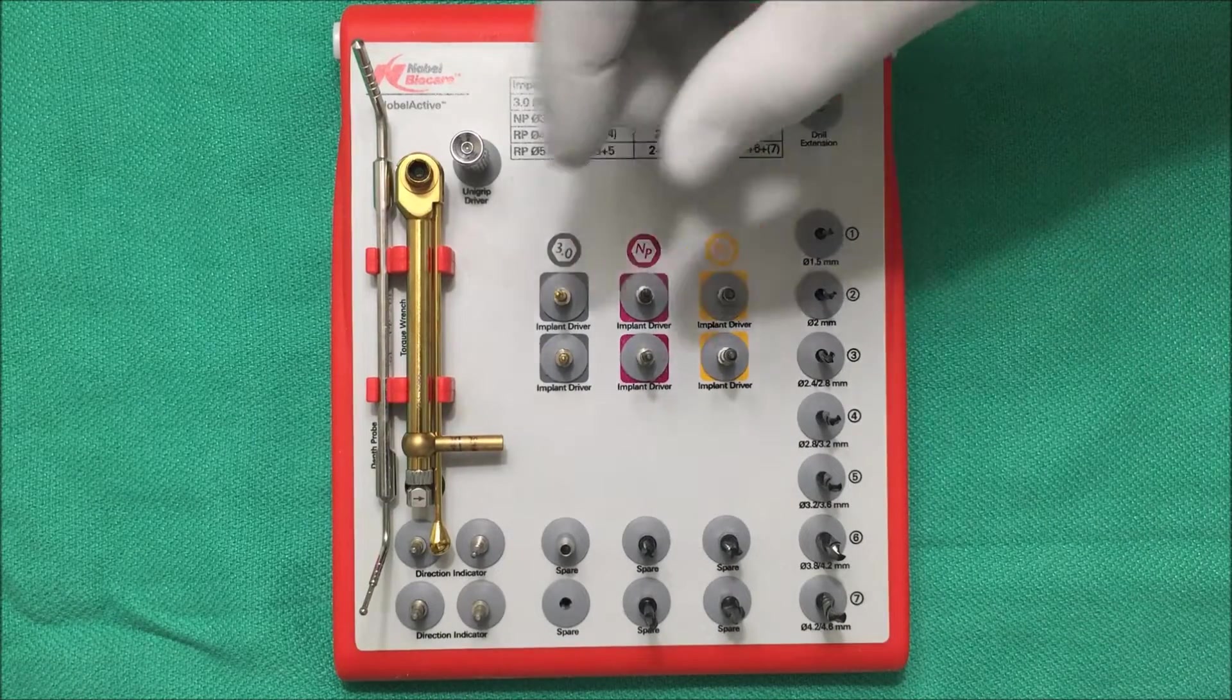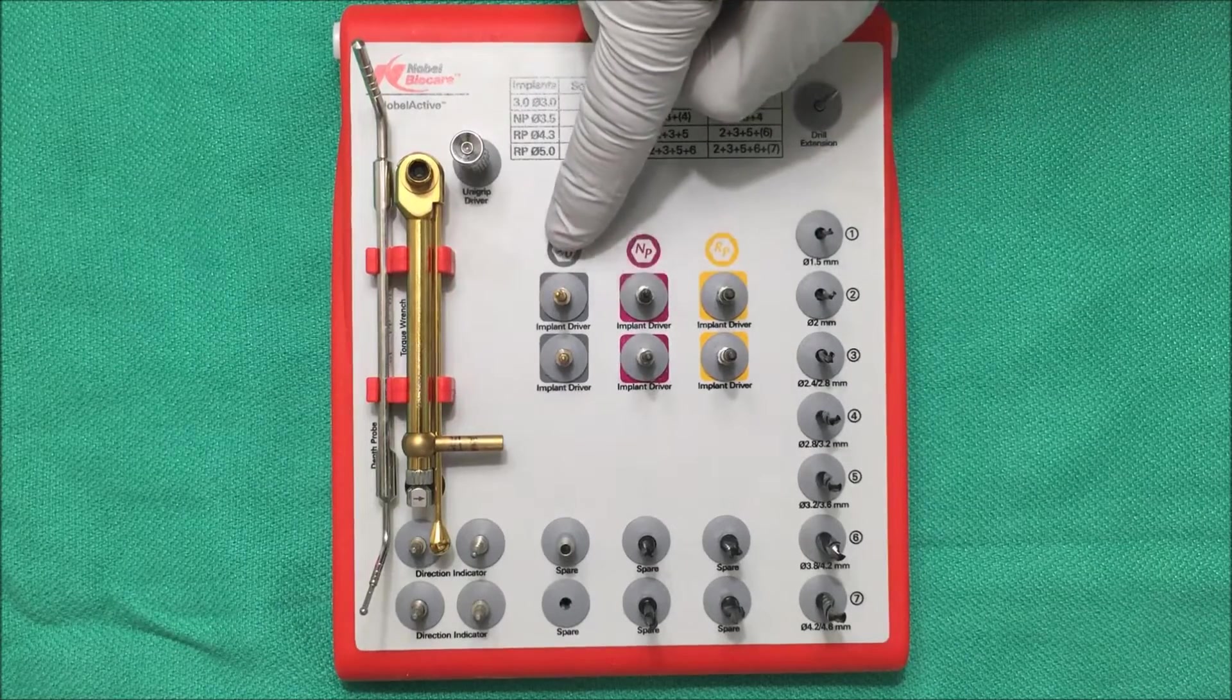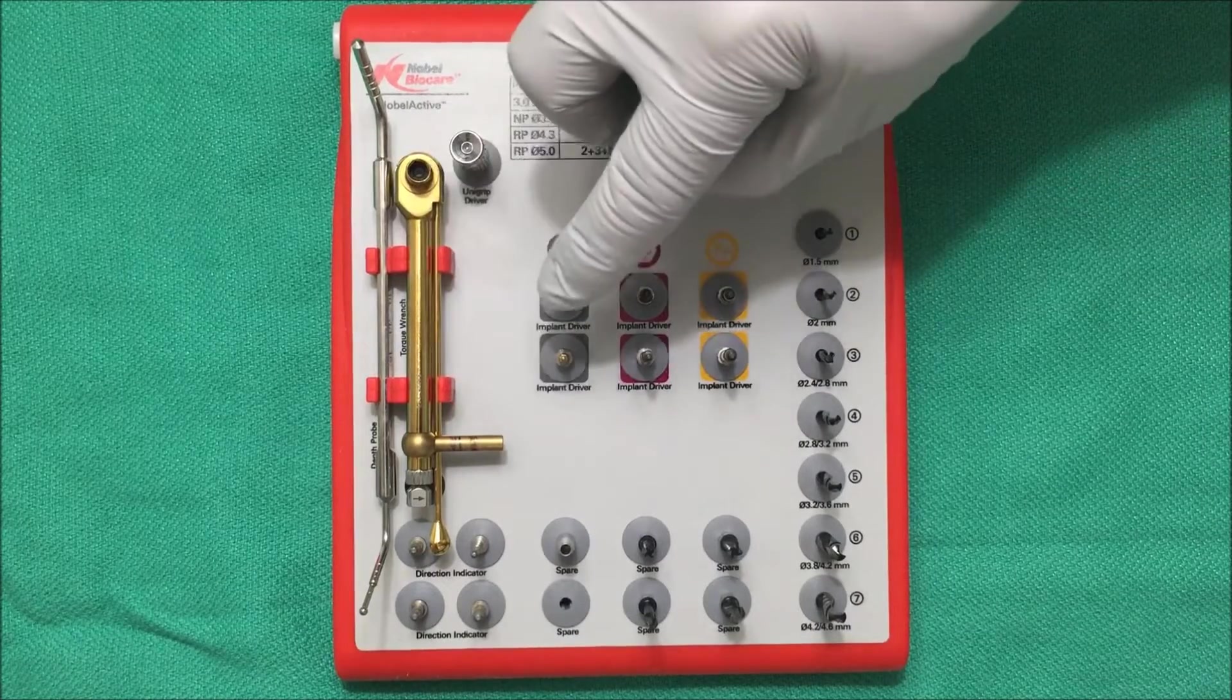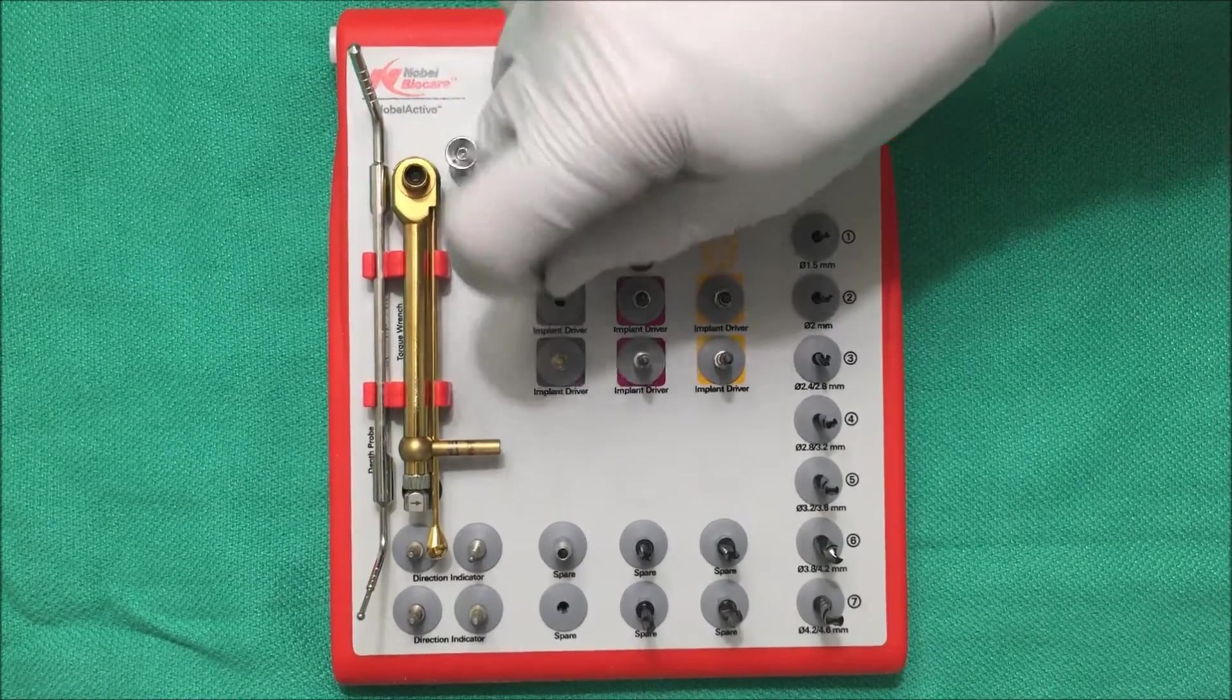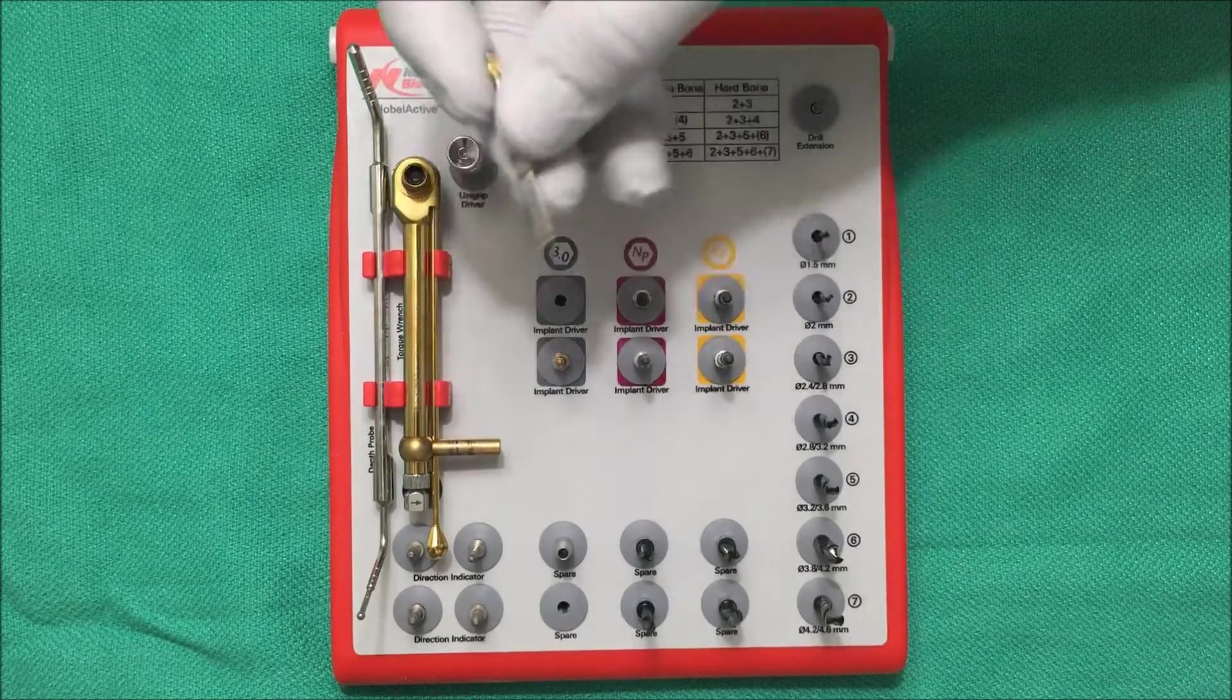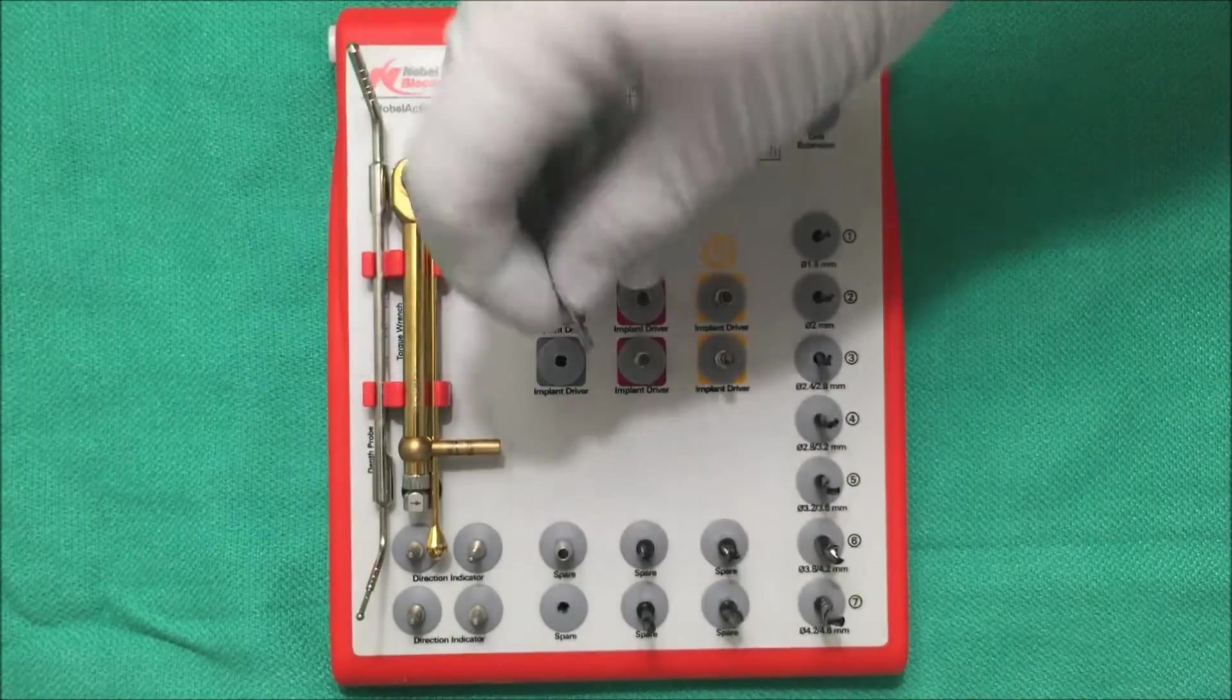So then you're ready to place the implant. The implant will be placed by these implant drivers right here. This is for the 3mm, the narrow platform, and the regular platform. They come in two different sizes depending on what size you need. If you have neighboring teeth that are tall then you might have to use a tall one. Otherwise, say it's a posterior region in the mouth, you might have to use a short one.